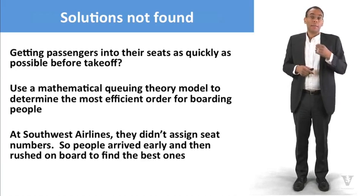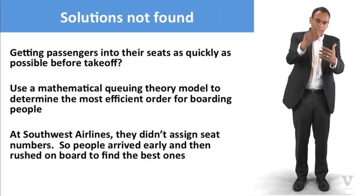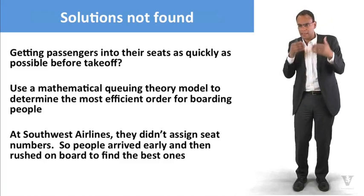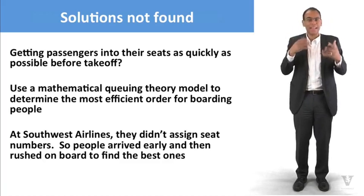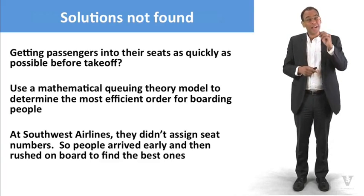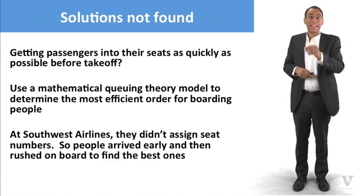For a long time, people tried to solve the problem using queuing theories and queuing models. Do we put them in the front and board from the back? Or do we board from the front and have the low numbers? Or do we go from both ends and all these different ways? Well, the solution, one of the better solutions that was come up with was not done in this way. And that solution is by Southwest Airlines.